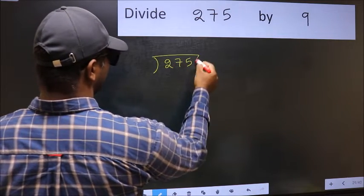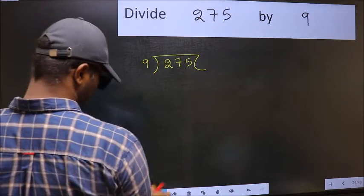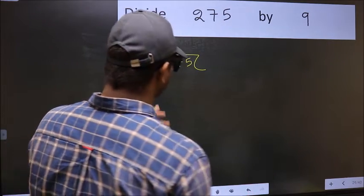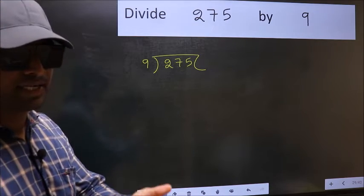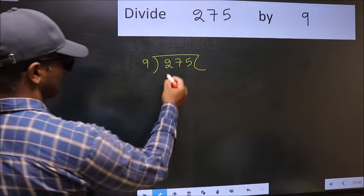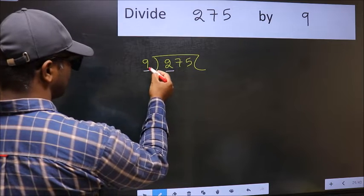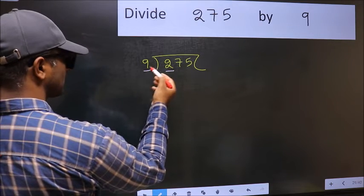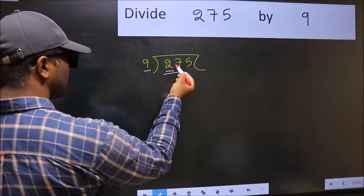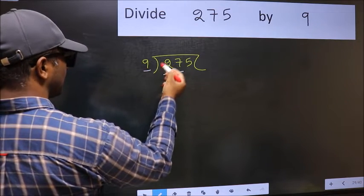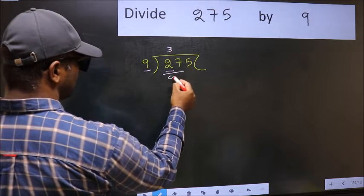275 and 9 here. This is your step 1. Next, here we have 2 and here 9. 2 is smaller than 9. So we should take 2 numbers, 27. When do we get 27 in 9 table? 9 times 3 is 27.